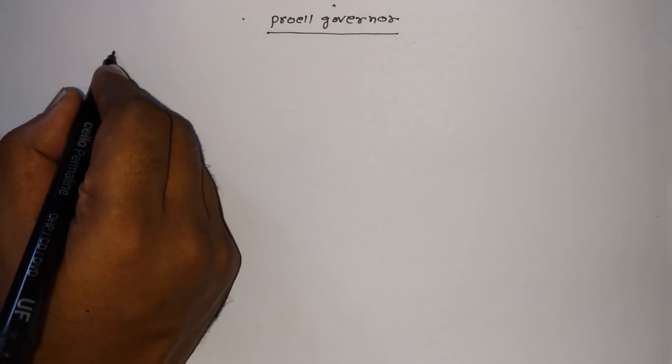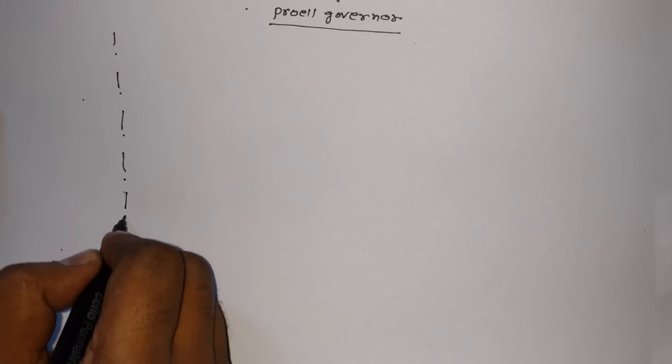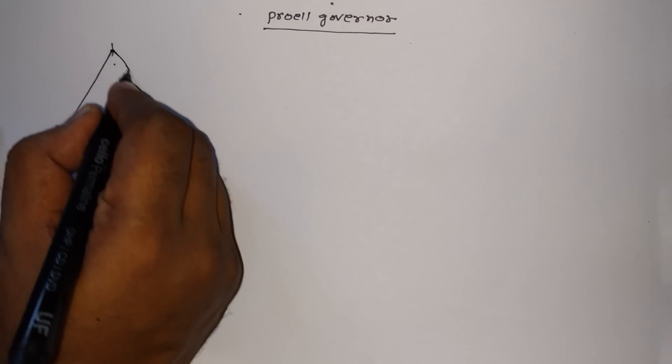Today in this tutorial we are going to derive the Proell governor. This is one type of governor — it is a centrifugal governor as well as a dead weight governor. Before going to derive the Proell governor, the most important point is that you have to remember the diagram. The diagram plays the most important role in any derivation. The better you remember the diagram, the better you can derive the equation. So let's go for the diagram first.